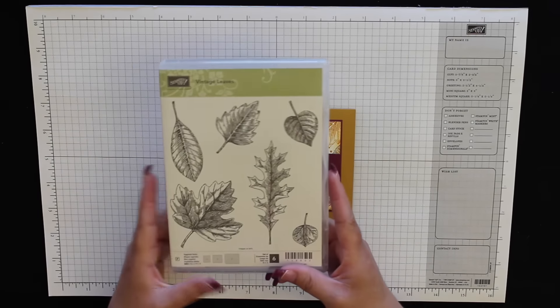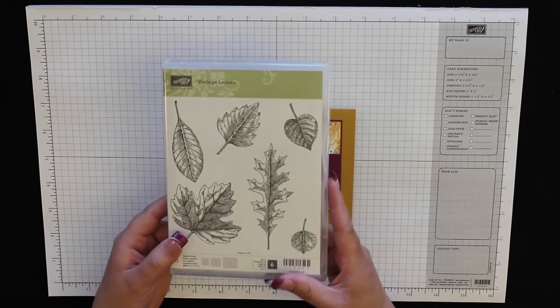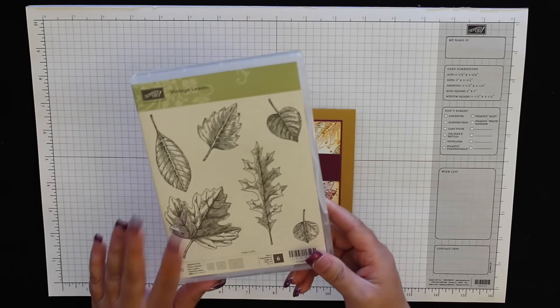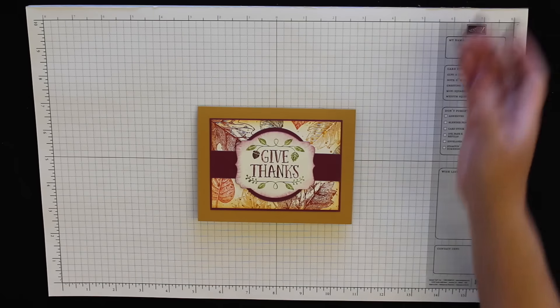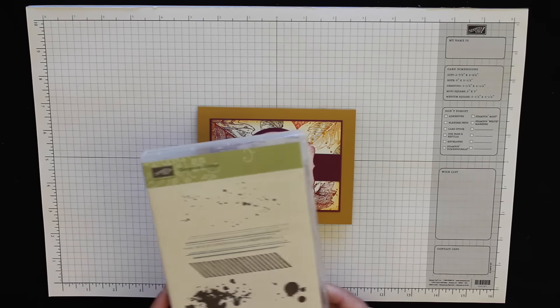This vintage leaf stamp set is in the regular catalog and it also has a coordinating set of framelits that come together. If you buy them at my store you get 15% off when you buy this and the set of framelits together, and then of course I'm using the gorgeous grunge stamp set just for this little speckled image right there.